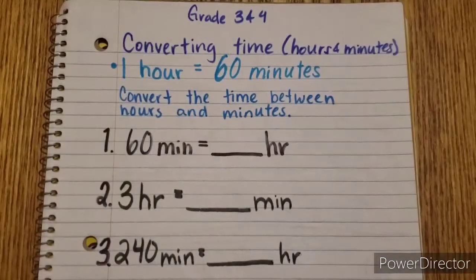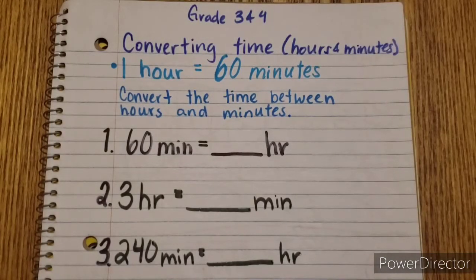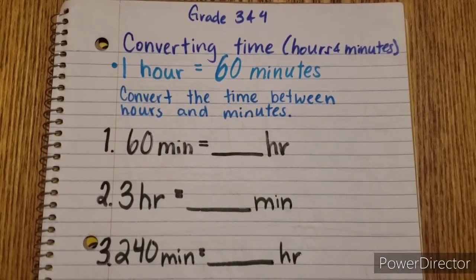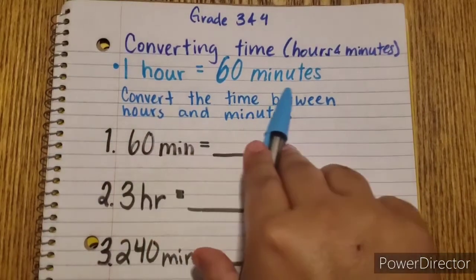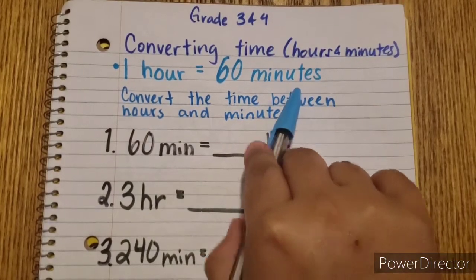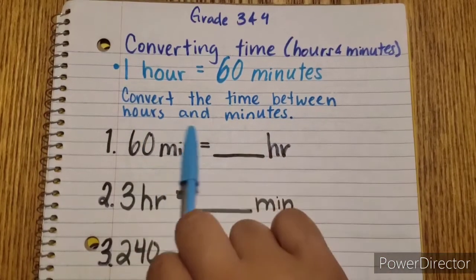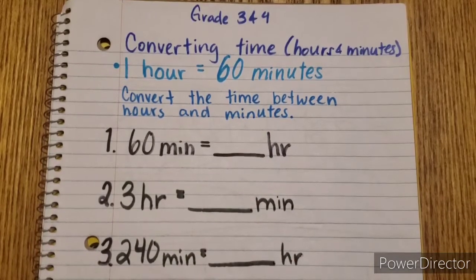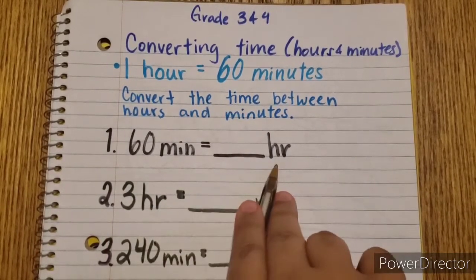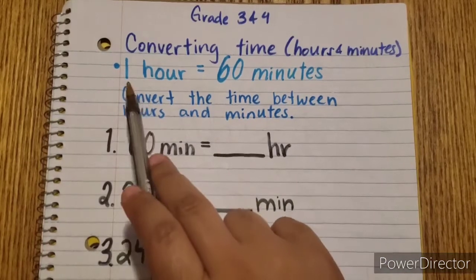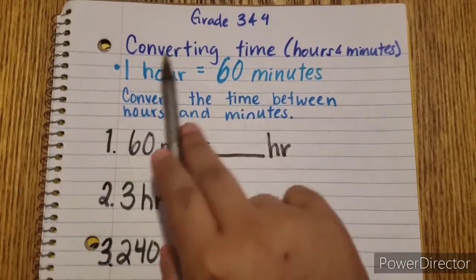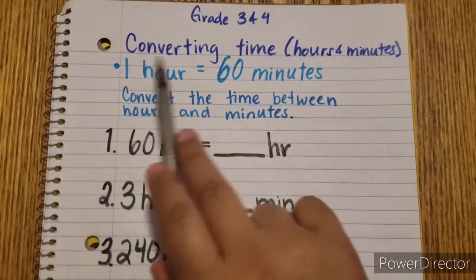Today we're going to get started with grade three and four converting time, and we're going to be focusing on hours and minutes. Here we have: one hour equals 60 minutes. So we need to convert the time between hours and minutes. Let's look at number one: 60 minutes equals how many hours? Since one hour equals 60 minutes, the opposite would be 60 minutes equals one hour.